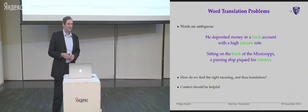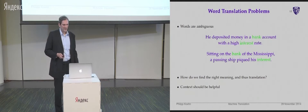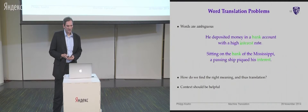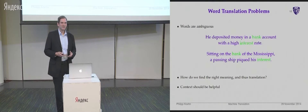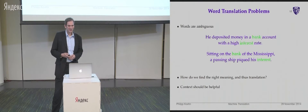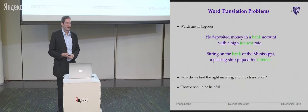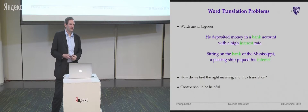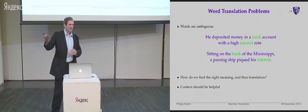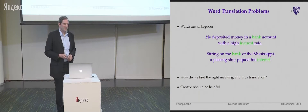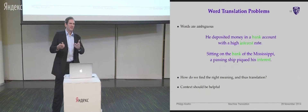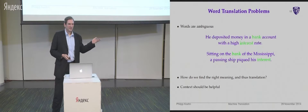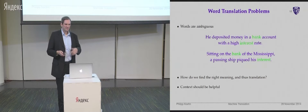Here is the most obvious example everybody thinks about with translation. We have two sentences: 'He deposited money in a bank account with a high interest rate' and 'Sitting on the bank of the Mississippi, a passing ship piqued his interest.' The words 'bank' and 'interest' have different meanings. In the first sentence, bank is a financial institution where you put your money; in the second, it's the side of a river. Similarly, interest in the first example means the percentage extra you earn, while in the second it means a sense of curiosity. In German or Russian, you would have different translations for these words, so the translation system has to figure out how to pick the right word.